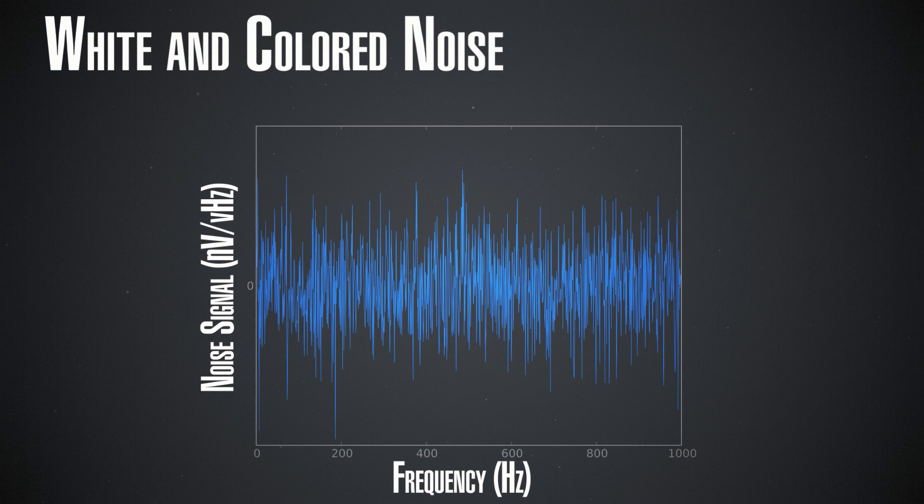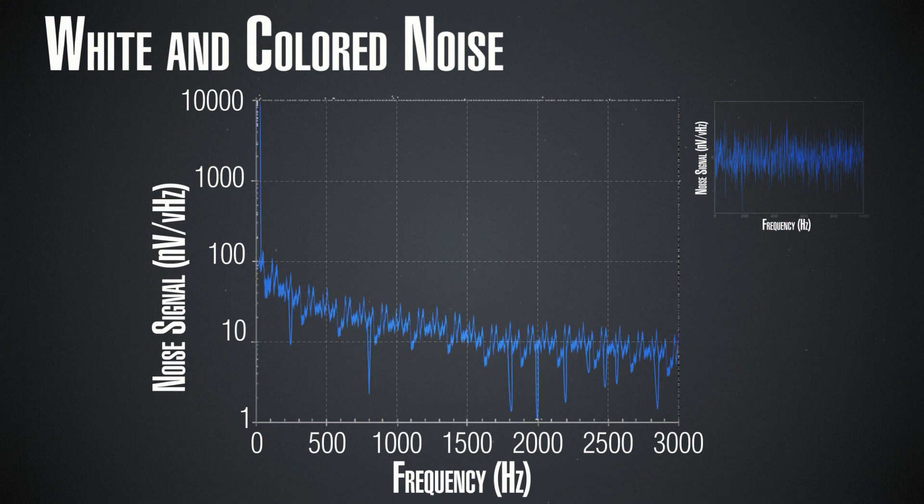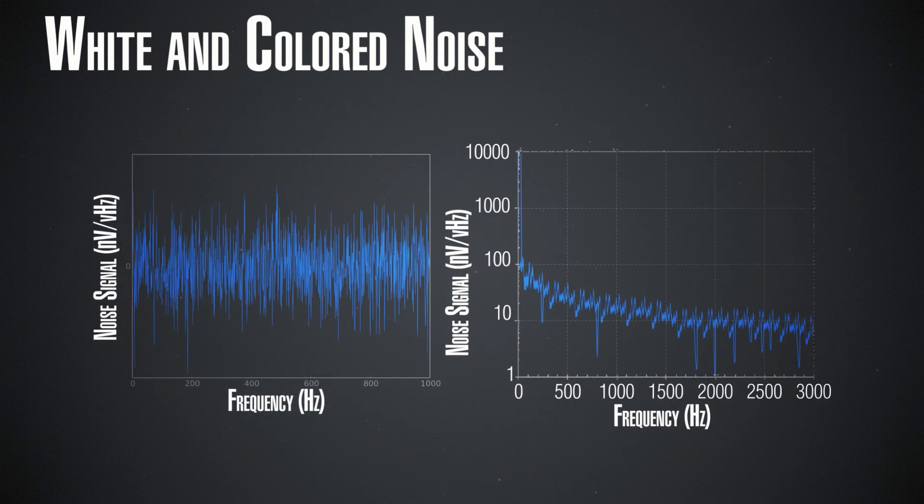Some noises, however, are colored. What we mean by this is that they affect certain frequencies more and they may even be completely absent in others. The flicker noise is an example of such a noise. It becomes lower and lower for higher frequencies. On the plot you can see what I am talking about.